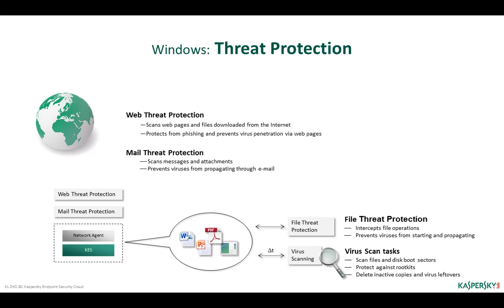Kaspersky Endpoint Security for Windows consists of components, each of which has its own area of responsibility. Some components protect against threats, others help to control the user. Protection components are the most numerous and can be grouped by functionality. The following components search for malware and neutralize it: virus scan tasks, file threat protection, mail threat protection, and web threat protection.